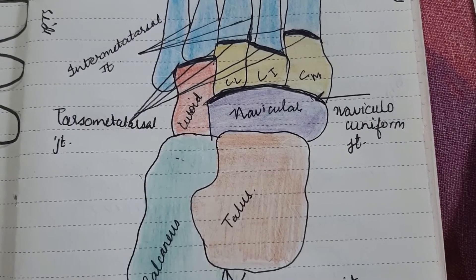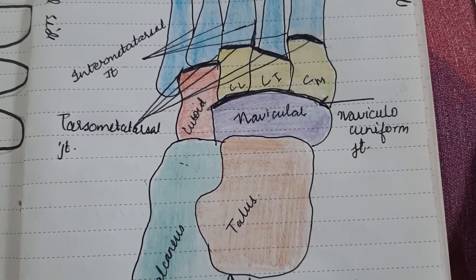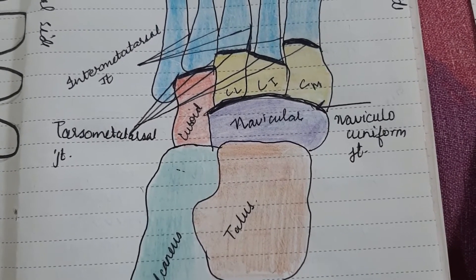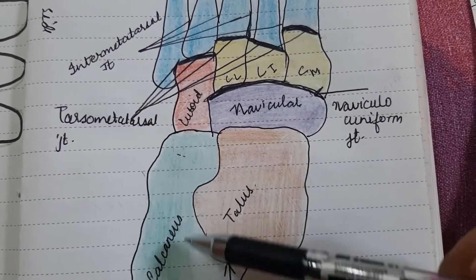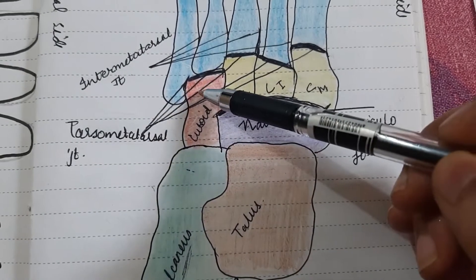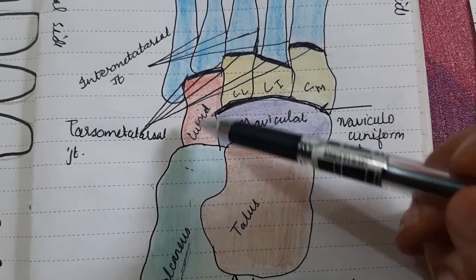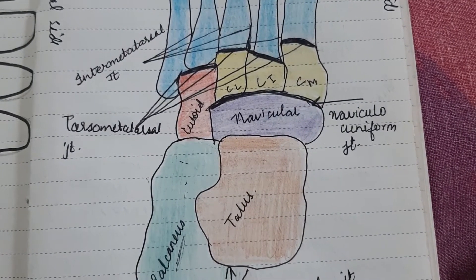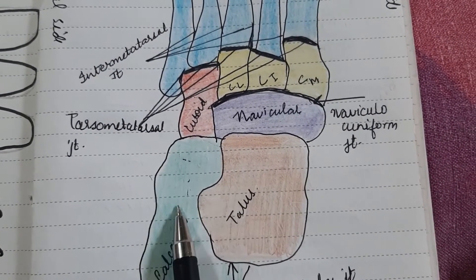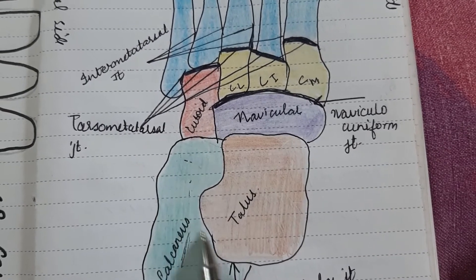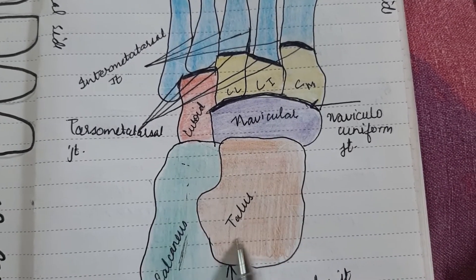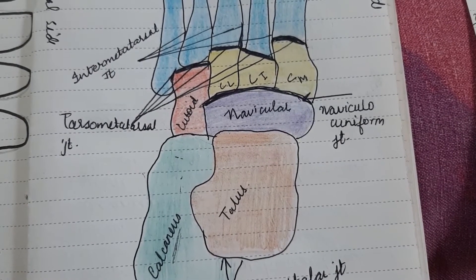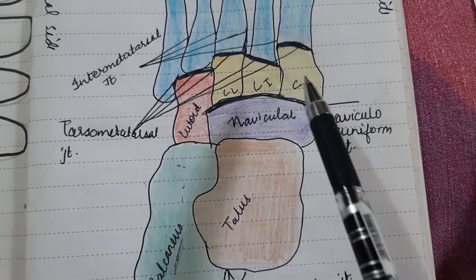In the mid foot there are a total of six joints. They are simple — you can guess them through their names. The first is the calcaneocuboidal joint: calcaneus and cuboid. The next is the talocalcaneonavicular joint: talus, calcaneum, and navicular.